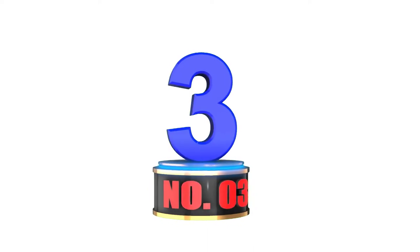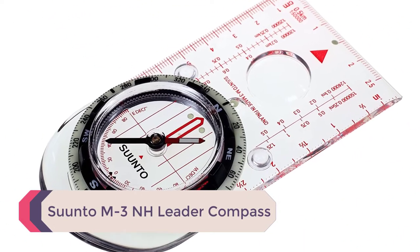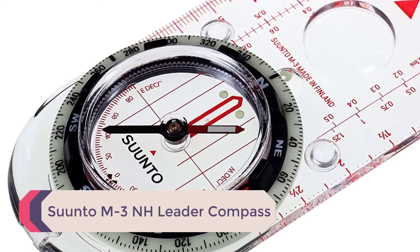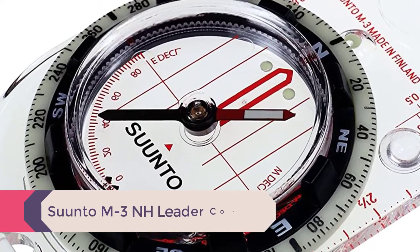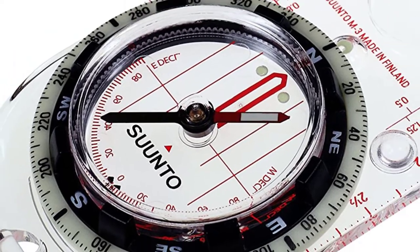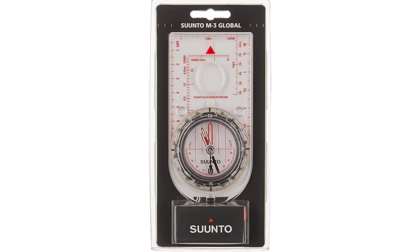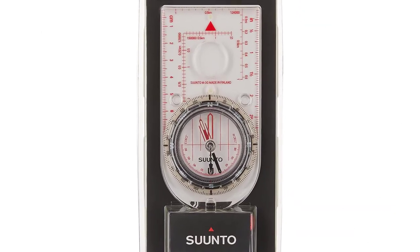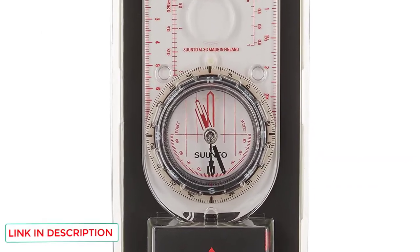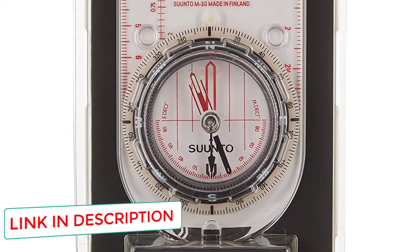Number 3: Suunto M3 NH Leader Compass. The M3 NH is another great compass made by Suunto that has a few nice features that the A10 Recreational Field Compass reviewed above doesn't. These features include adjustable declination correction, luminescent markings for low-light conditions, and a magnifying lens on a transparent baseplate for easy use with maps. The only downside is that it's twice the price.